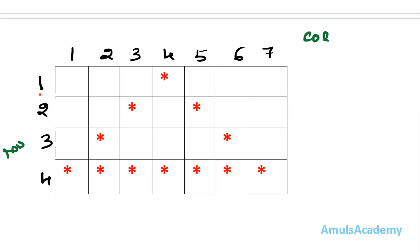At row 1 we will check for columns 1 through 7. After printing row 1 we will go to row 2 and check for columns 1 through 7. After printing row 2 we will go to row 3. So first we need to write the for loop for row, and inside that we need to write the for loop for column.